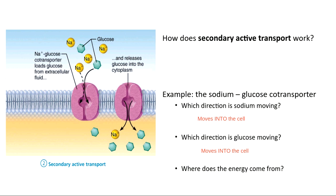If I spent no energy and used channel proteins to move sodium and glucose, sodium would rush into the cell and glucose would rush out. Now let's look at the sodium glucose co-transporter. Sodium is going into the cell — but with the co-transporter, sodium going into the cell does not require energy. Glucose going into the cell does require energy, because there's already a lot of it inside.